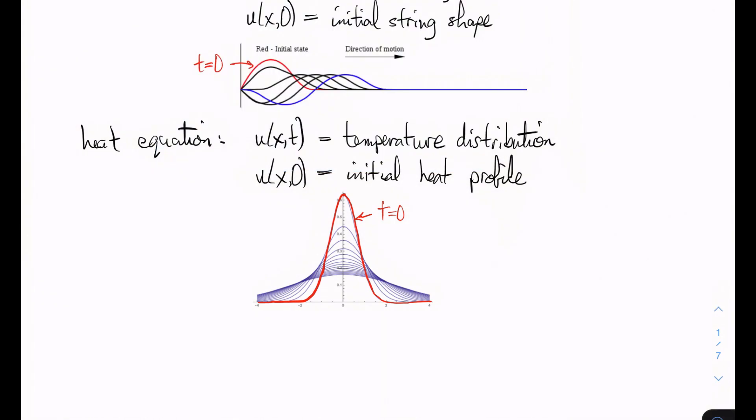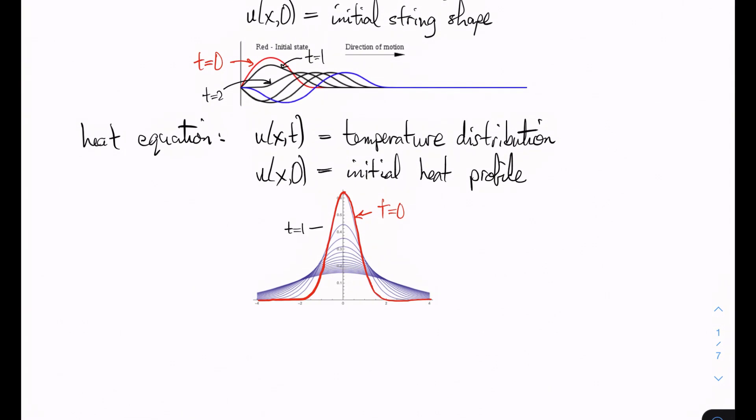And then we have some other curves as time progresses. So maybe as time equals one would be this one right here, and then time equals two would be this one right here, and so on and so forth. And you can see the wave propagating as time passes. In the heat equation, we have something similar. The heat distribution begins to change and the heat kind of spreads out through the bar that we're looking at, and the hot spot that we started with in the middle dissipates.